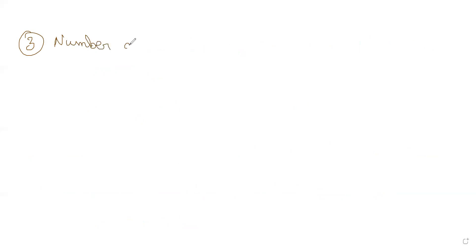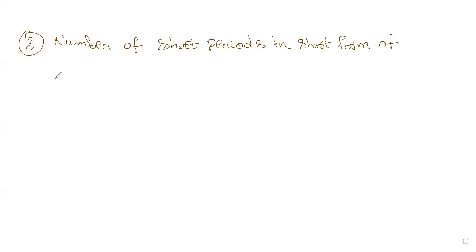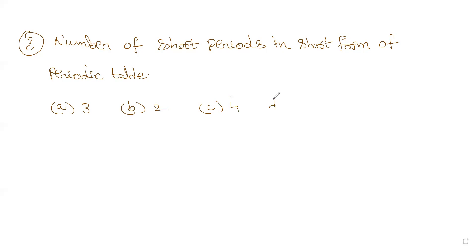Question 3: Number of short periods in the short form of the periodic table. Option A: three. Option B: two. Option C: four. Option D: six. The correct answer is A — three.